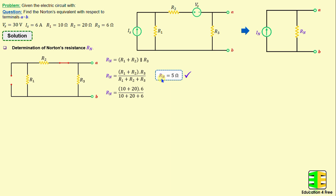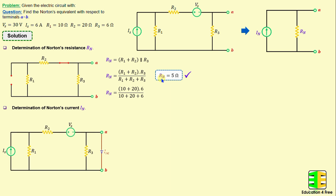After finishing the determination of the Norton's resistance, we proceed to calculate the Norton's current IN. The Norton's current is basically the short circuit current calculated between terminals A and B. The resistance R3 is short-circuited, meaning no current flows through R3.